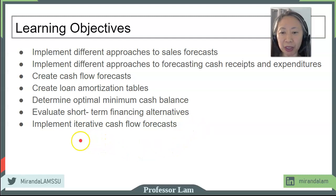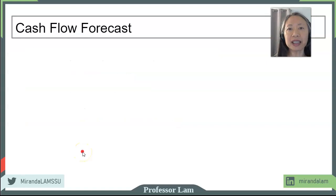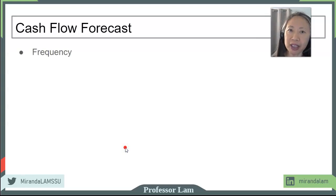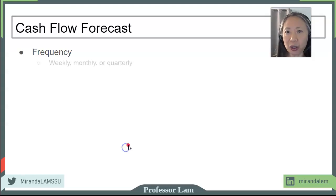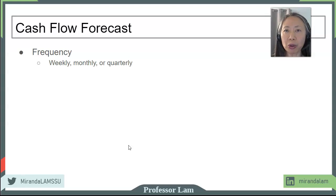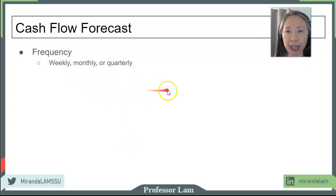One very important thing about cash flow forecasts is that it's an iterative process. Let's take a look at a few important decisions you need to make before you conduct your forecast. One of them is the frequency — how the duration of the forecast is set. The frequency can be weekly, monthly, or quarterly. The larger the business, the more frequent you want to conduct your forecast. But for most businesses, you should do at least a monthly forecast.